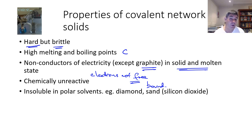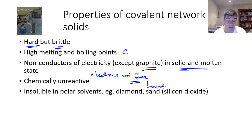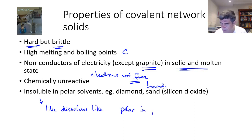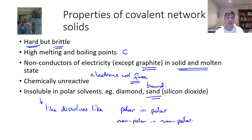Most covalent network solids are chemically unreactive. You can get carbon in the form of diamond to react with oxygen to form carbon dioxide, but you'll have to trust me on that because it's very expensive carbon dioxide to produce yourself. These solids are also insoluble in polar solvents. The rule is 'like dissolves like' — polar substances dissolve in polar solvents and non-polar substances dissolve in non-polar solvents. Otherwise, all the sand on beaches would dissolve every time the waves came in — but it doesn't, because it's insoluble in water. And of course, diamond is as well.